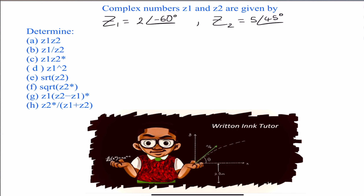Welcome back. In today's video, we have the complex numbers Z1 and Z2, and we want to determine A through H. Most manipulations of complex numbers are easier to do in polar form, and some are easier to do in rectangular form. Rectangular form is easiest when we subtract or add, while polar form is best for division and multiplication. Let's go ahead and start today's video.